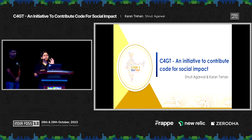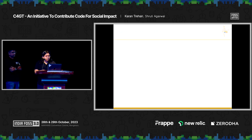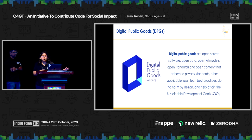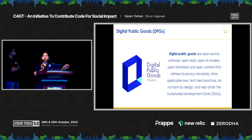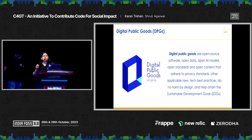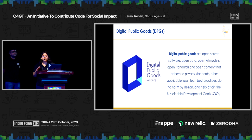Before diving deep into what C4GT is and why we started it, let's get familiar with some terminologies. The first is digital public goods. It is comprised of two words: digital and public goods. Digital represents any electronic tool, resource, or device that can store or present data, whereas a public good is a commodity or service for the well-being of society. It can be provided by any organization, private individual, or government body.